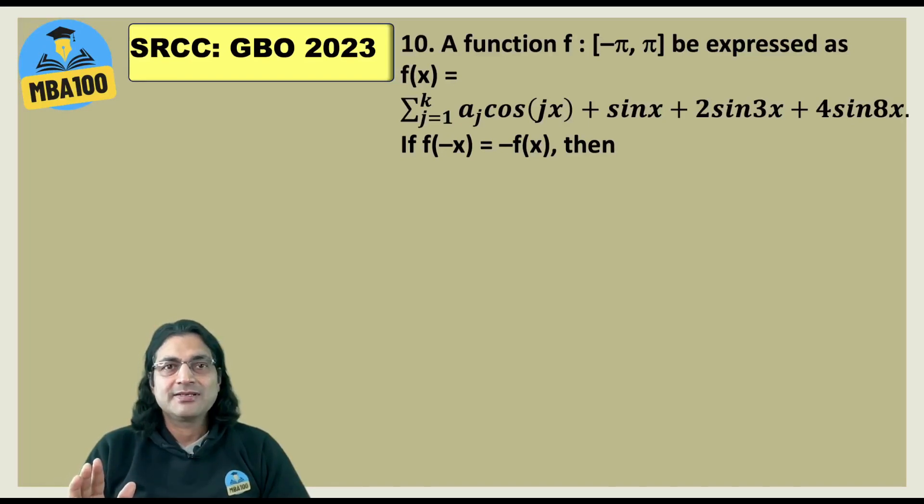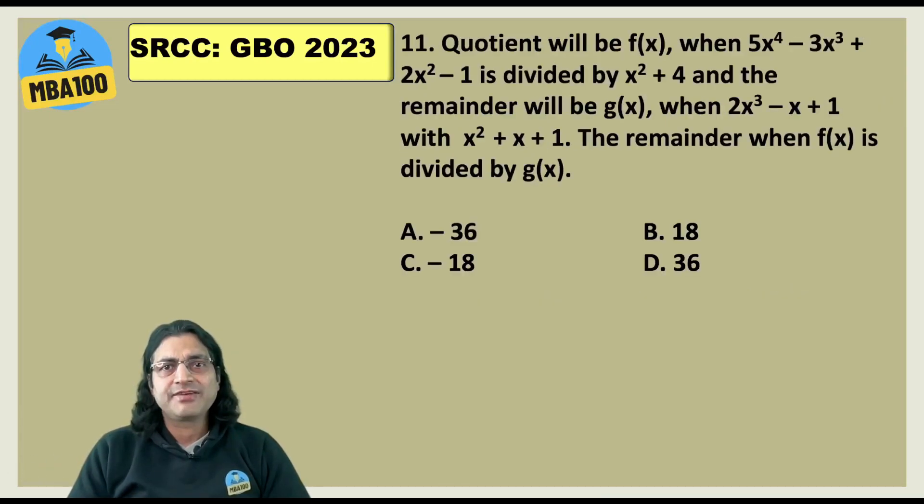What about this one? This question looks dangerous especially those people who have not stayed in touch with mathematics of classes 11 and 12. But here look ultimately function of minus x should be equal to minus of function of x. That is always true for sine. sine of minus x is minus sine x but that is not true for cos. Cos of minus x is cos x itself. Hence the coefficient of the cos part should be 0. So AJ is 0.